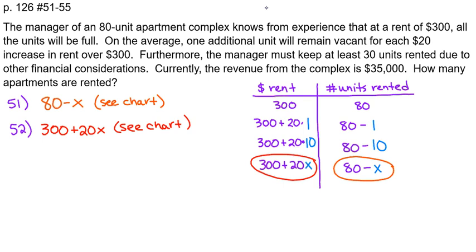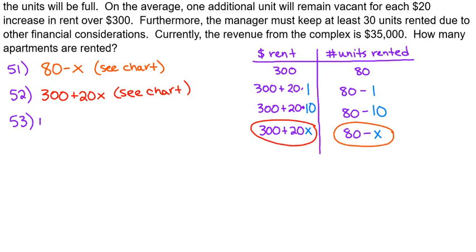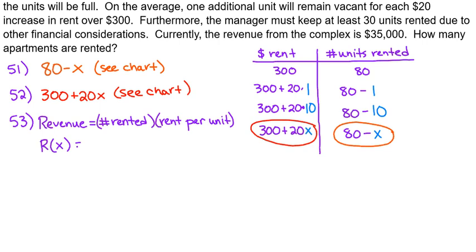Problem 53 starts to talk about revenue. Revenue is the number of units rented multiplied by the rent per unit. So the rent amount times the number of units rented — I'm going to call that r(x), the revenue as a function of x. The number rented is 80 minus x, and the rent per unit is 300 plus 20x. Problem 53 just asks us to set that equation up.